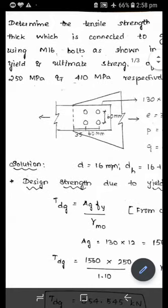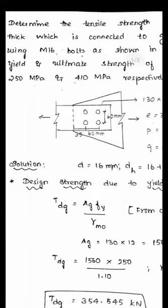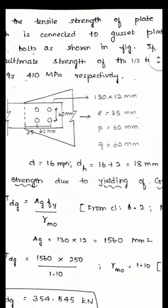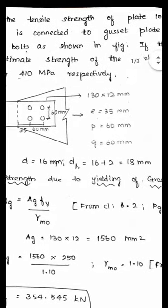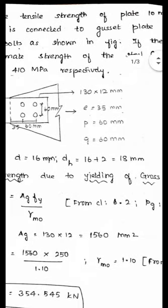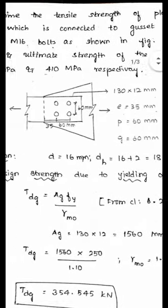The diameter of the bolt is given as 16 mm. The diameter of the hole can be obtained by adding the standard clearance of 2 mm, giving the diameter of the hole as 18 mm.